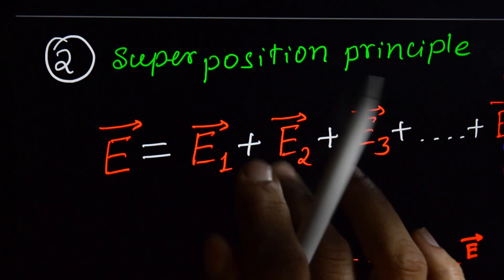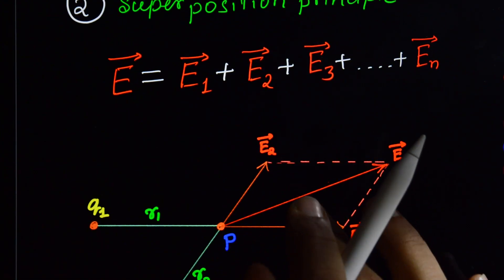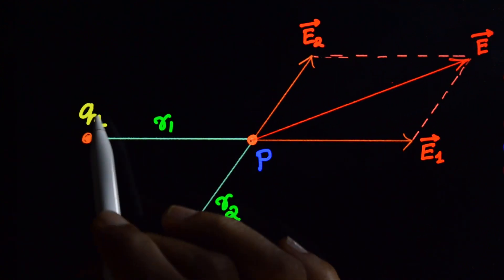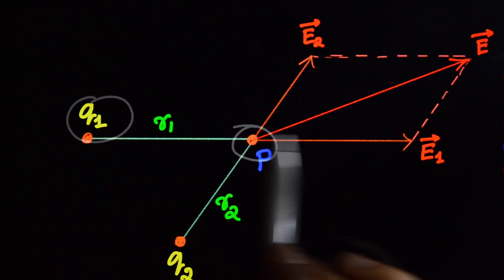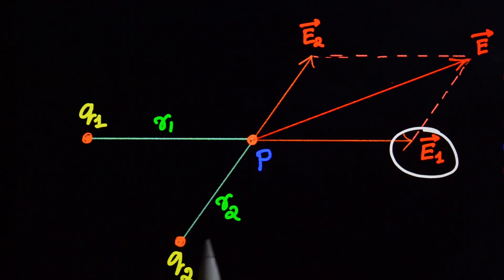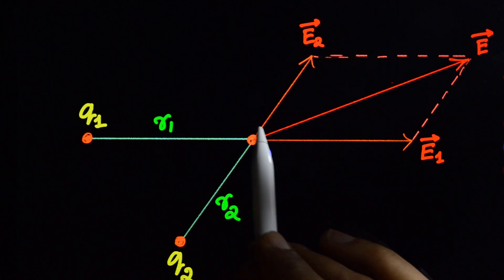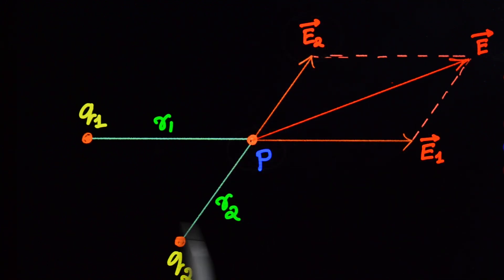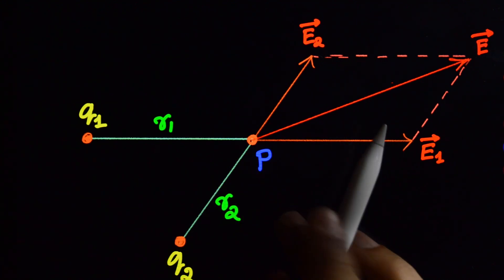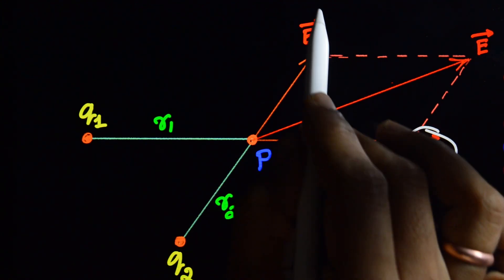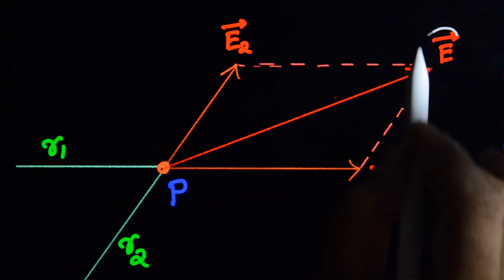Superposition principle: suppose we have charge q1 — the electric field at point P due to q1 is E1. For charge q2, the electric field at point P is E2. For charge q3, it is E3. The vector sum of E1, E2, E3 gives you the resultant electric field E at point P.